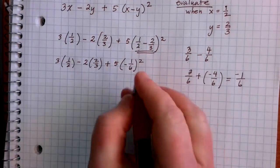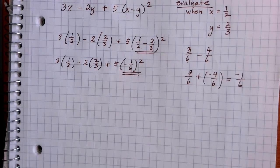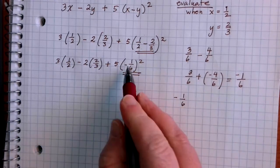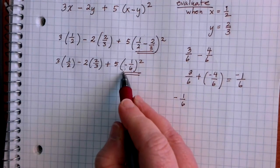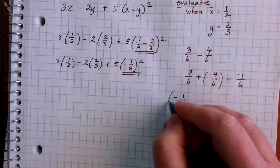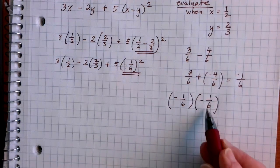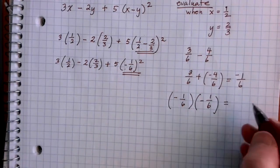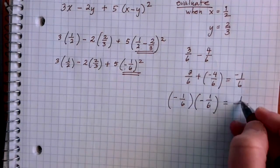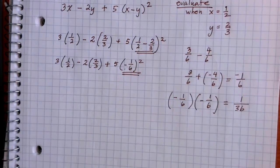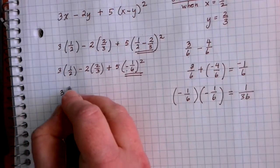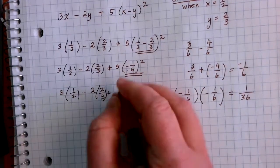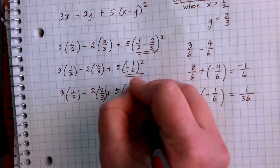The next step is exponents. I have negative one-sixth squared. Squaring something means multiplying it by itself, so negative one-sixth times negative one-sixth: negative times negative is positive, then multiply across the top and bottom — one times one is 1, six times six is 36 — giving positive one over 36. So the expression becomes 3 times one-half, minus 2 times two-thirds, plus 5 times one over 36.